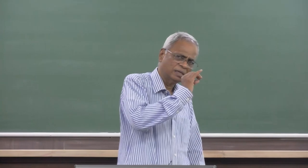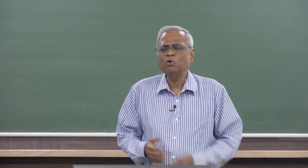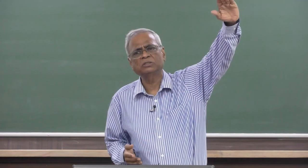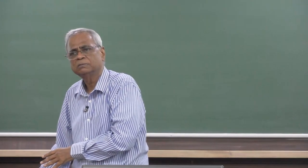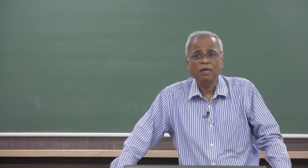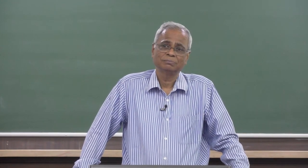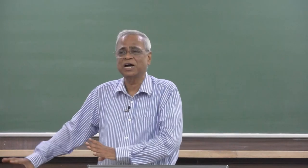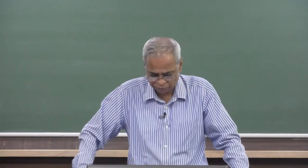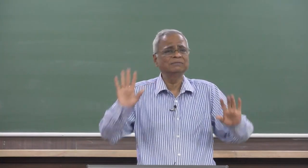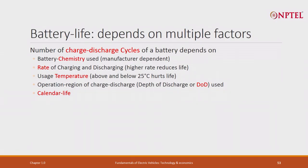Another point from earlier lectures: are you going to charge the battery fully and discharge it fully — 100 percent charge to 0 percent? If you operate between 0 and 100 percent, battery life goes down. You should not discharge it fully and not charge it fully. This is called depth of discharge, or DOD. And there is also what is called calendar life — even if you just leave the battery sitting, battery life keeps going down.